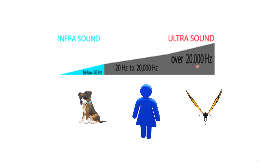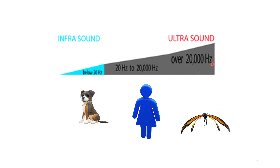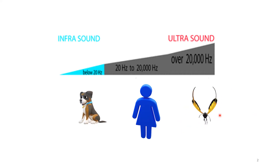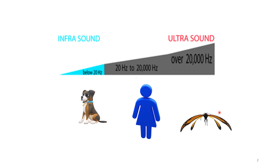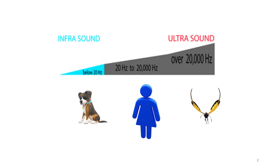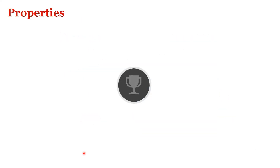Sound waves having frequency greater than 20 kilohertz are termed as ultrasonic. Creatures like insects and bats can hear that frequency. This is the classification of sound waves depending upon their frequency. Now we will see what are the properties of ultrasonic sound waves.